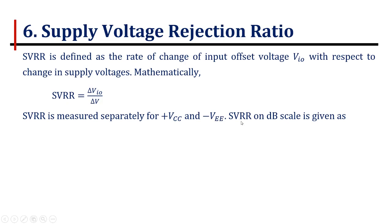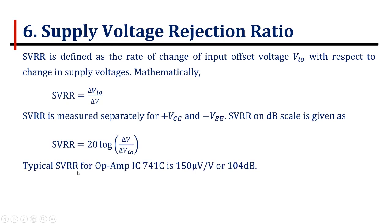SVRR on dB scale is given as 20 log of delta V upon delta VIO. The typical value of SVRR for op-amp IC 741C is 140 microvolts per volt or 104 dB. Lower the value of the SVRR, better is the op-amp IC.